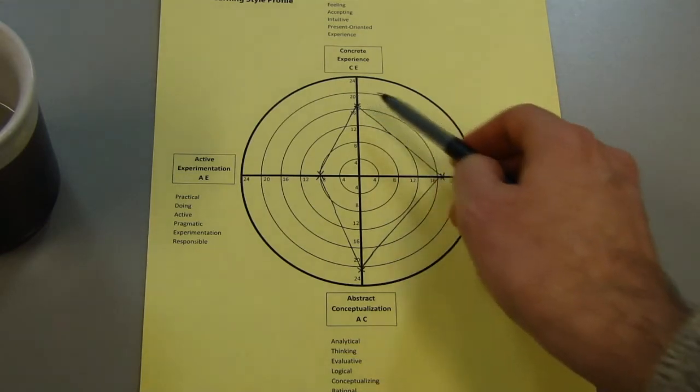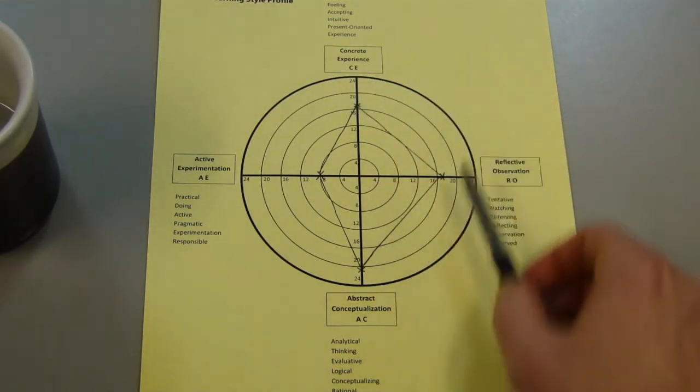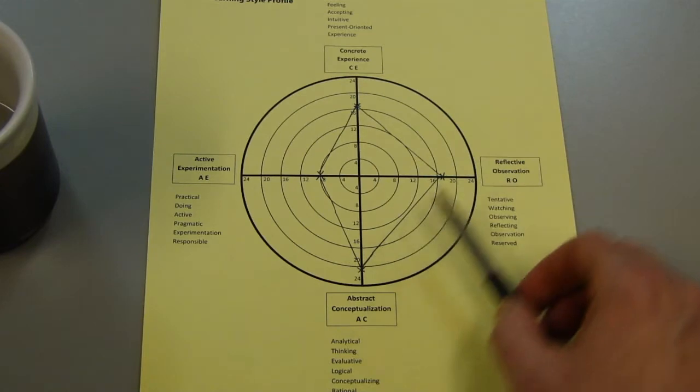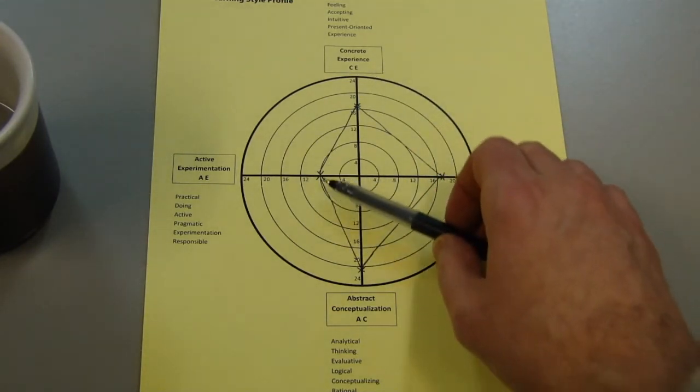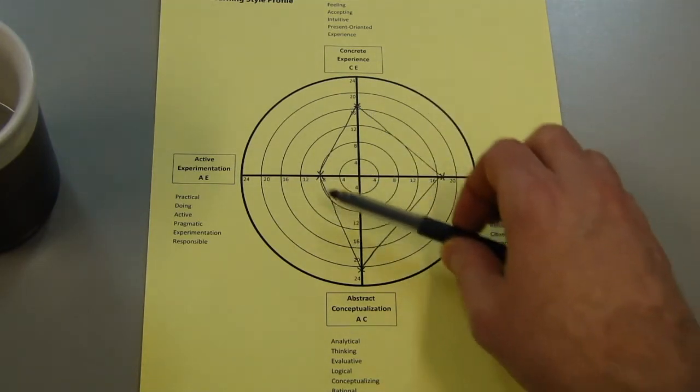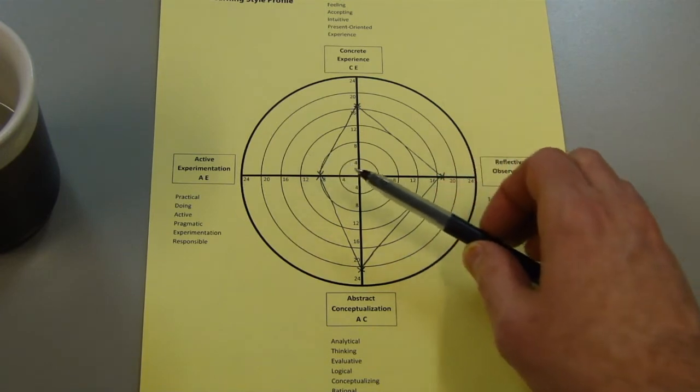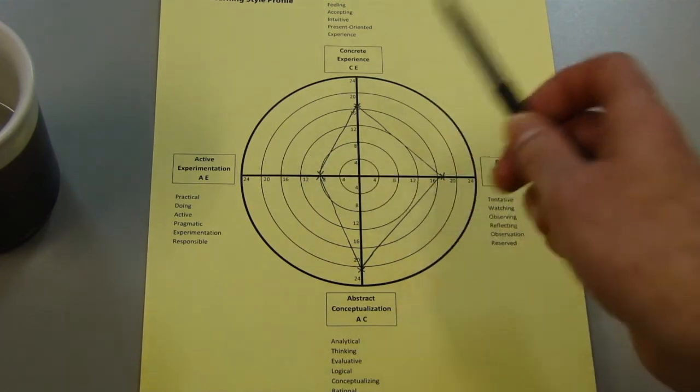So it tells me that I'm strongest in this hemisphere, this side of the equation, and the active experimentation part of learning is not where I gravitate towards. And so I need it useful for me to know going forward that that may be something I want to work on.